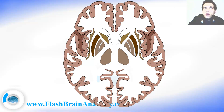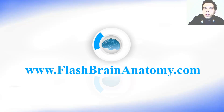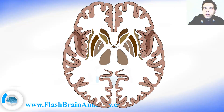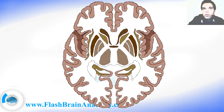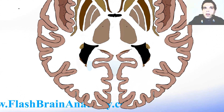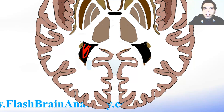Here you can see the anterior horn of the lateral ventricle. As I mentioned in the lessons about the lateral ventricle — which you can find on my website, flashbrainanatomy.com — the caudate nucleus creates the lateral wall of the anterior horn of the lateral ventricle. To understand this better, watch the lessons about the lateral ventricles on my website. At the end, I will just illustrate the posterior horn of the lateral ventricle, and the other part of the caudate nucleus.